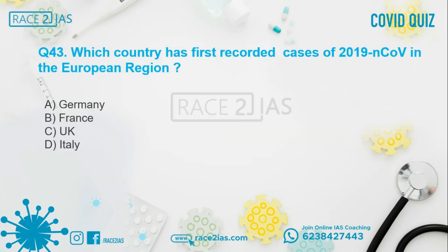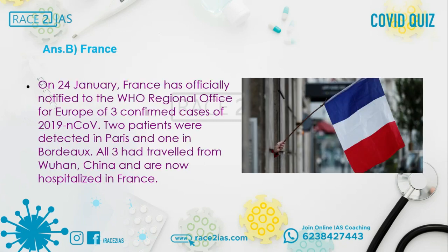Question number 43: Which country first recorded cases of SARS-CoV-2 in the European region? Option A: Germany. Option B: France. Option C: UK. Option D: Italy. The right answer is Option B, France. On 21st January, France officially notified the WHO Regional Office for Europe of three confirmed cases of novel coronavirus. The patients were detected in Paris and one in Bordeaux. All three had traveled from Wuhan, China and were hospitalized in France.